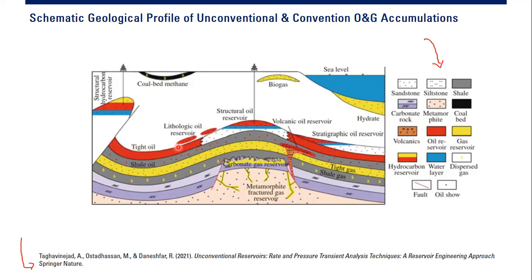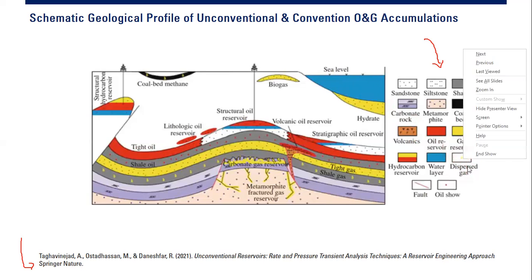Red means oil reservoir, so here we have tight oil — oil contained within this layer, I think this is the shale stone, so the tight oil is contained in the shale stone formation. Yellow is for gas. If you have yellow at the top and red at the bottom, it means a gas and oil hydrocarbon reservoir. Blue of course means water. And dispersed gas means gas in a dispersed distribution. This line means a fault, and a dot of oil means an oil show.